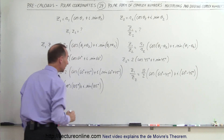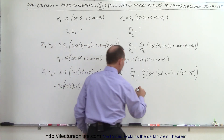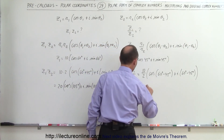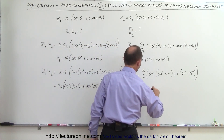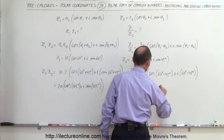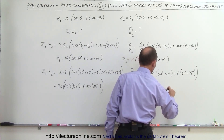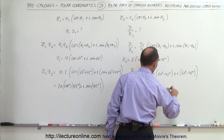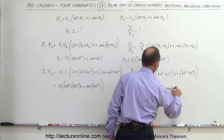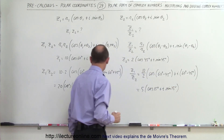And if we divide them, Z1 divided by Z2 would be equal to 10 divided by 2, times the cosine of 60 degrees minus 45 degrees, plus i times the sine of 60 degrees minus 45 degrees. That simplifies to 5 times the cosine of 15 degrees plus i times the sine of 15 degrees.